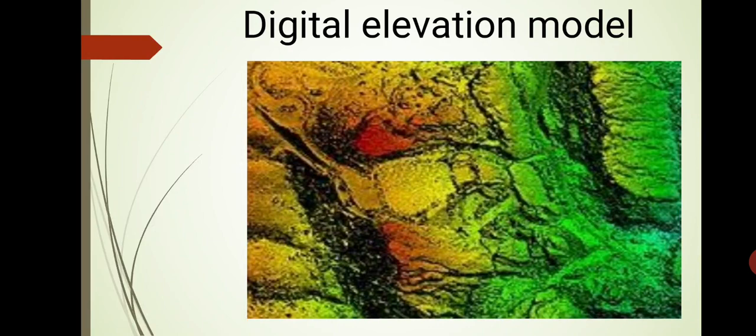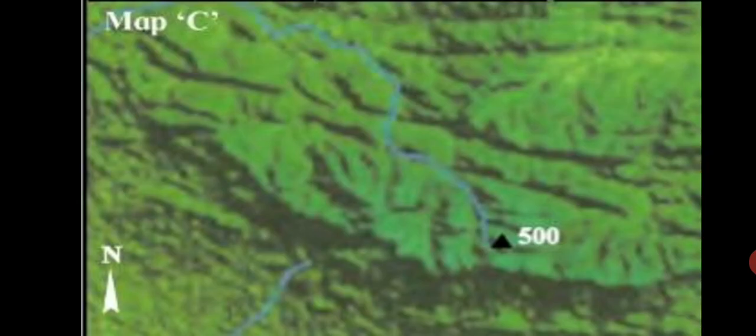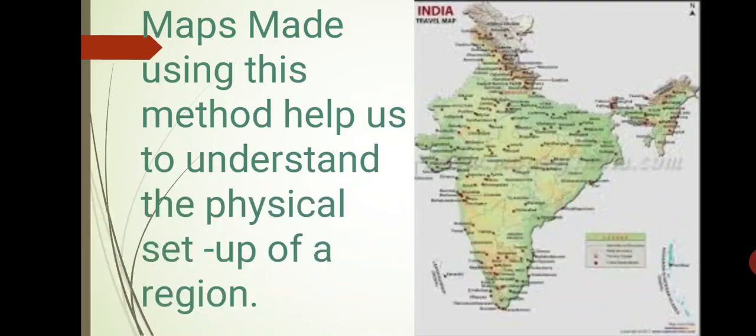This is the most modern method. In this, the information obtained through man-made satellites is presented with the help of computers. See map C. In it, we can directly observe the differences in the height of landforms. Maps made using this method help us to understand the physical setup of a region.